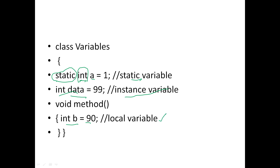What is the difference between instance and local variables? The instance variable int data equal to 99 is declared after the class opening, while the local variable int b equal to 90 is declared within a method. Variables declared in a block or method have scope limited to that method. Variables declared after the class opening — with or without the static keyword — are either instance or static variables. So the scope of a variable is decided by where it is declared.